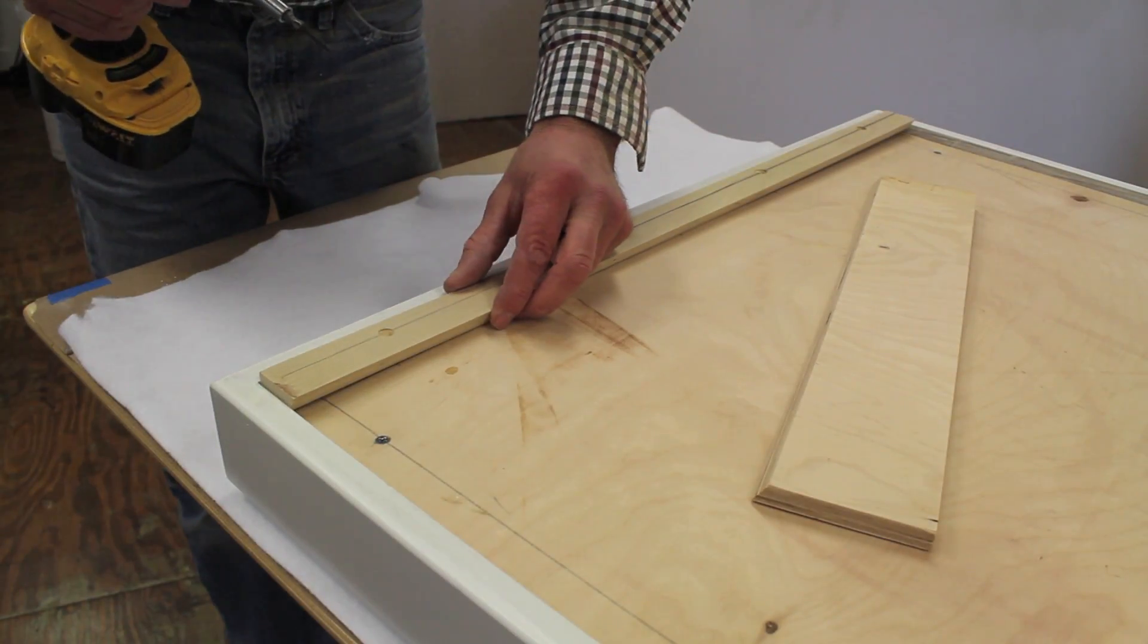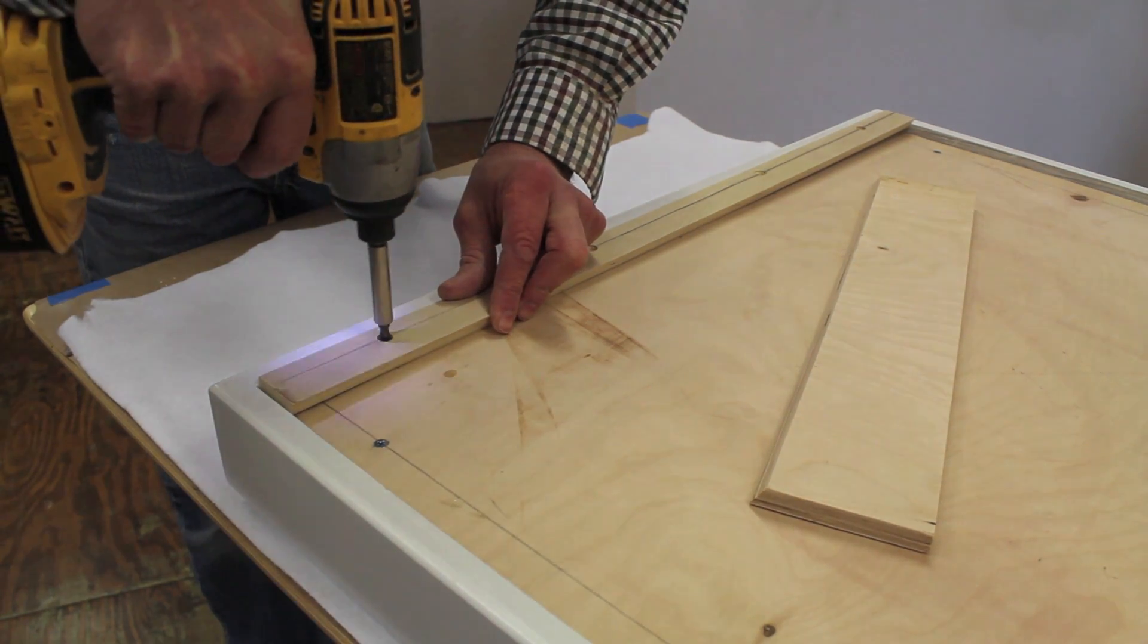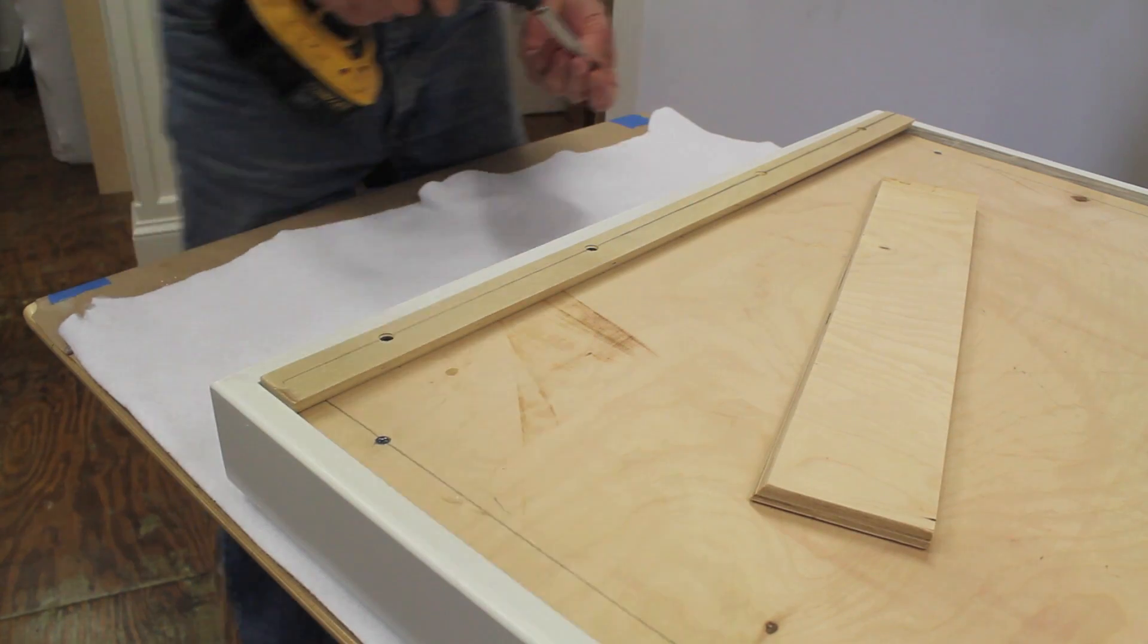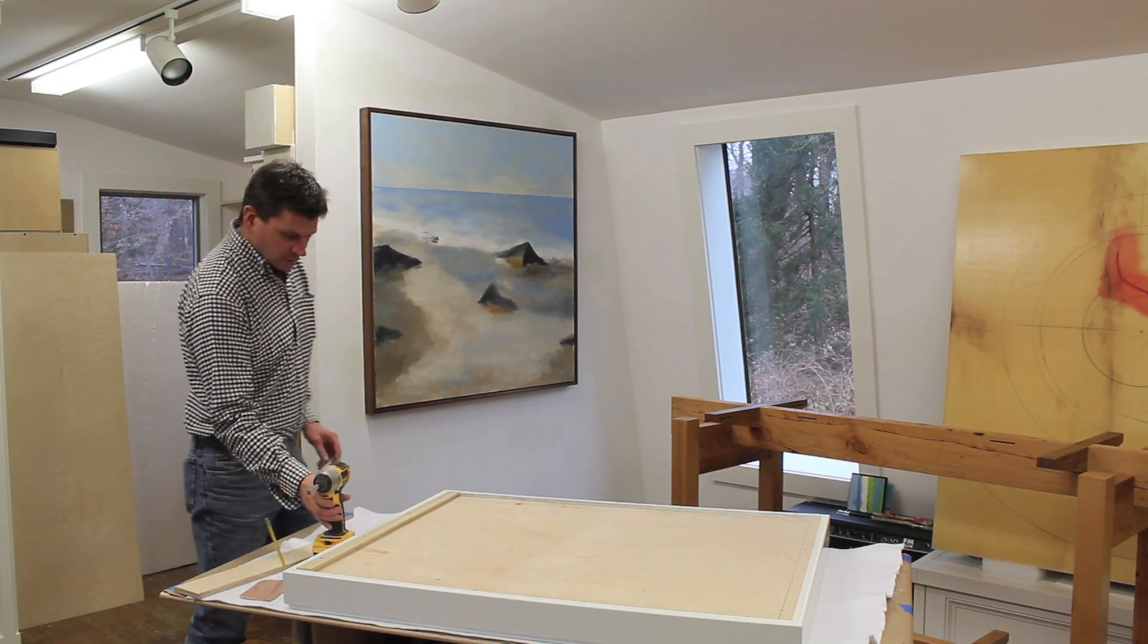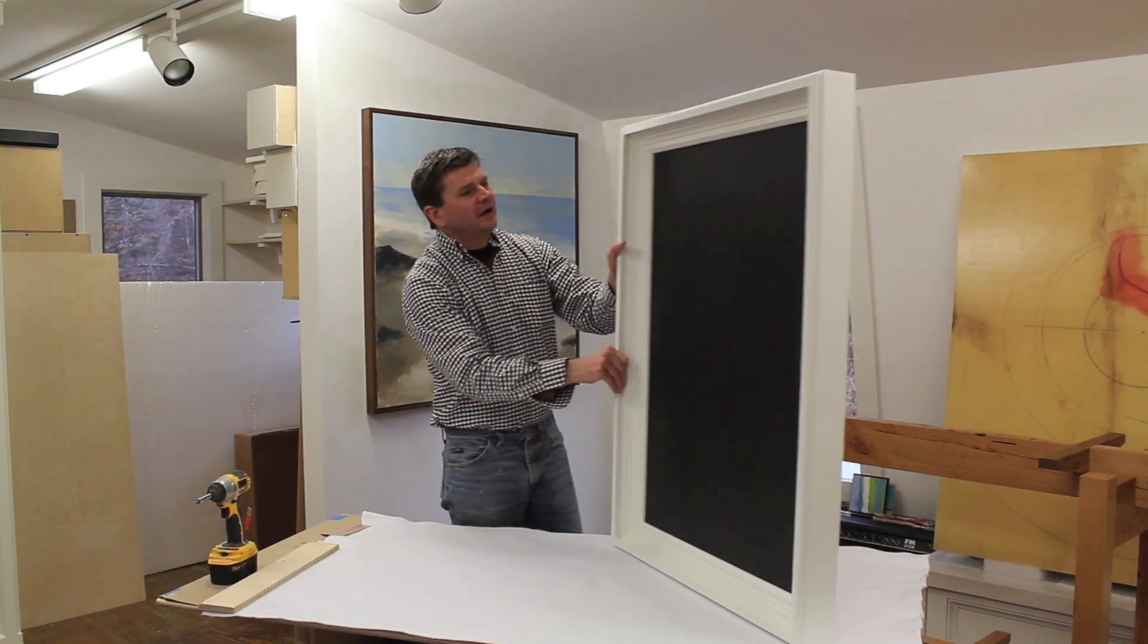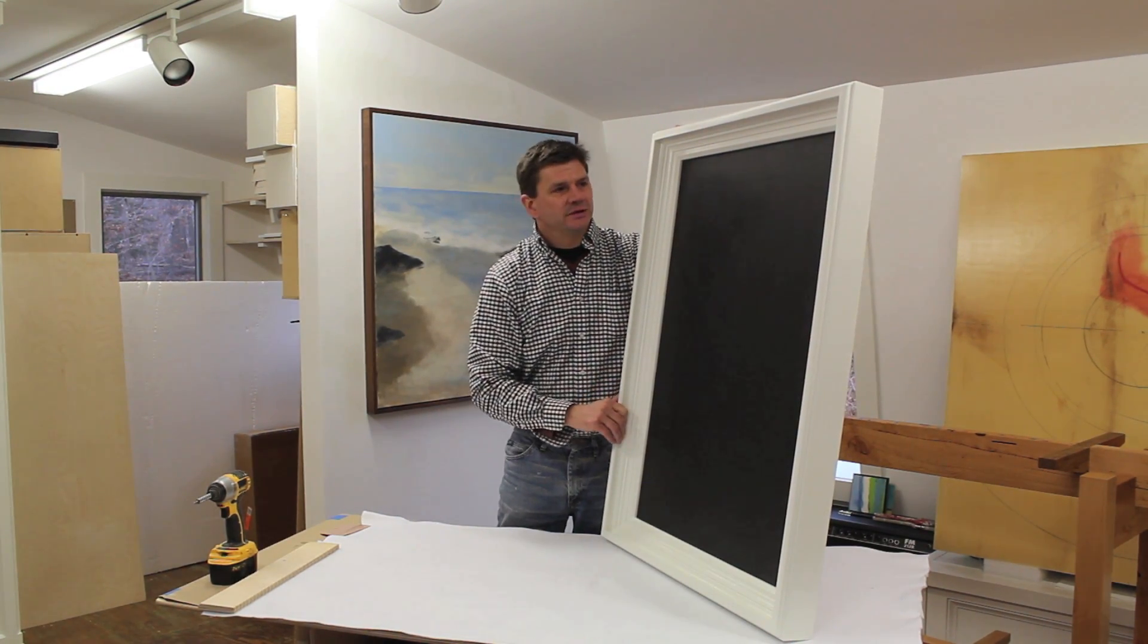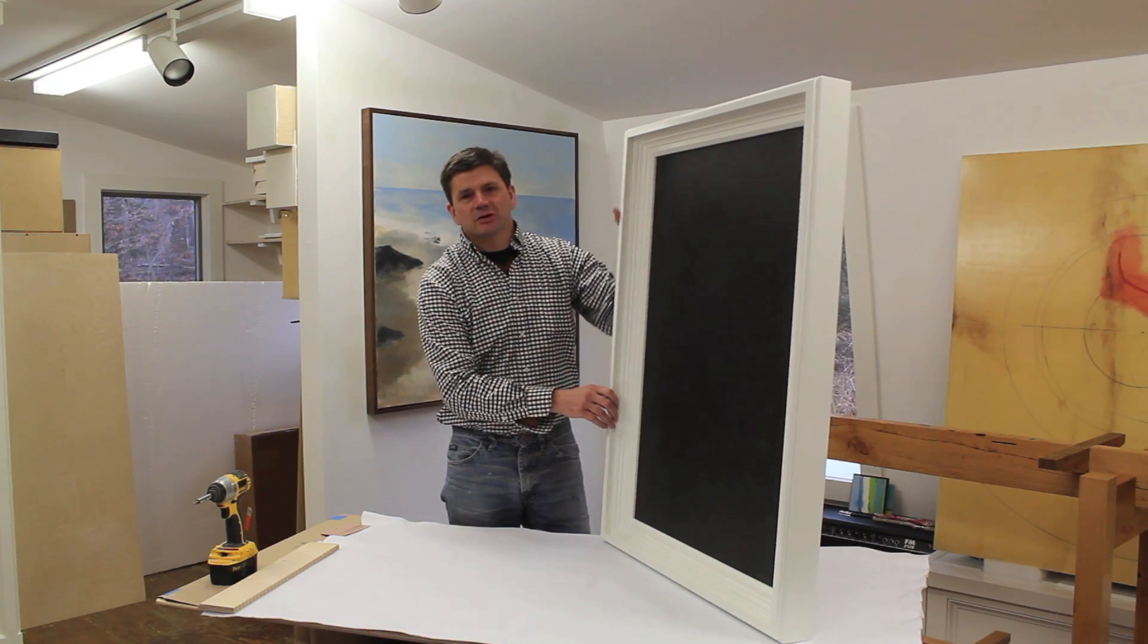I'll use the French cleat system to hang the chalkboard, and this way the chalkboard will always be straight on the wall. And that looks pretty good. What we're going to use the chalkboard for is grocery lists and maybe recipes, but also for inspirational sayings and maybe famous quotes.